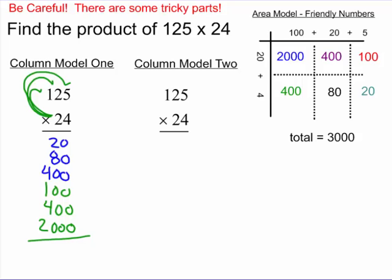20 times 20 is 400. And 20 times 100 is 2,000. And when I total all of that up, I should find I get a nice value of 3,000 as my final product.